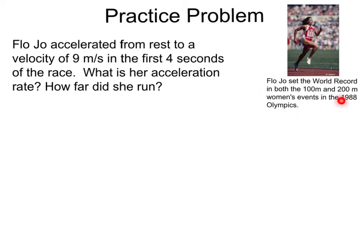Back in 1988, Flojo set the world record in both 100m and 200m women's events. If Flojo accelerated from rest to a velocity of 9m per second in the first 4 seconds of the race, what is her acceleration rate and how far did she run? Let's read it again for the given information. So Flojo accelerated from rest, so this means her initial velocity was 0.